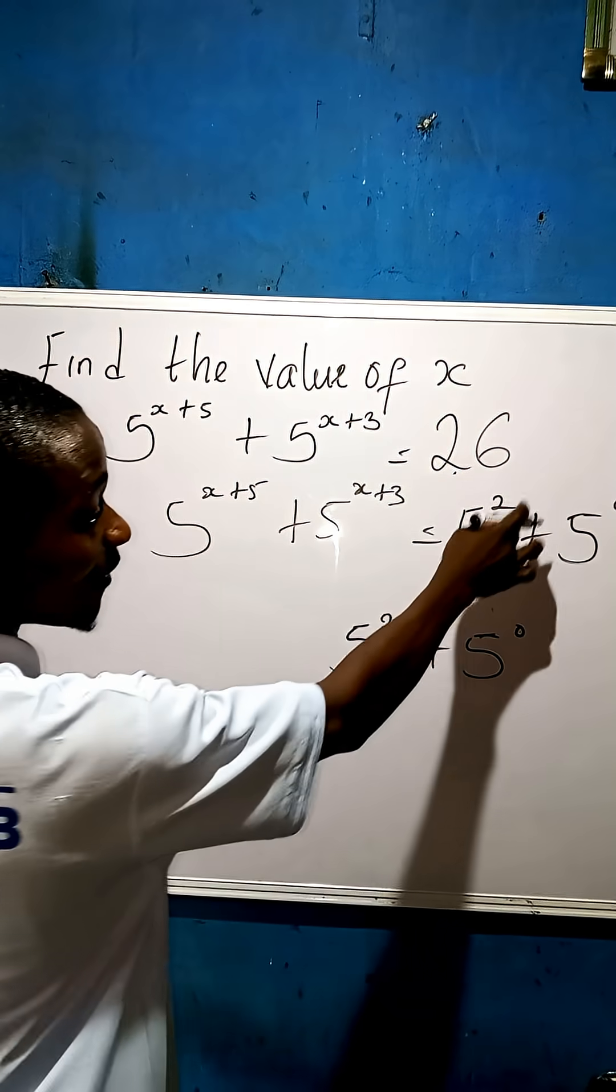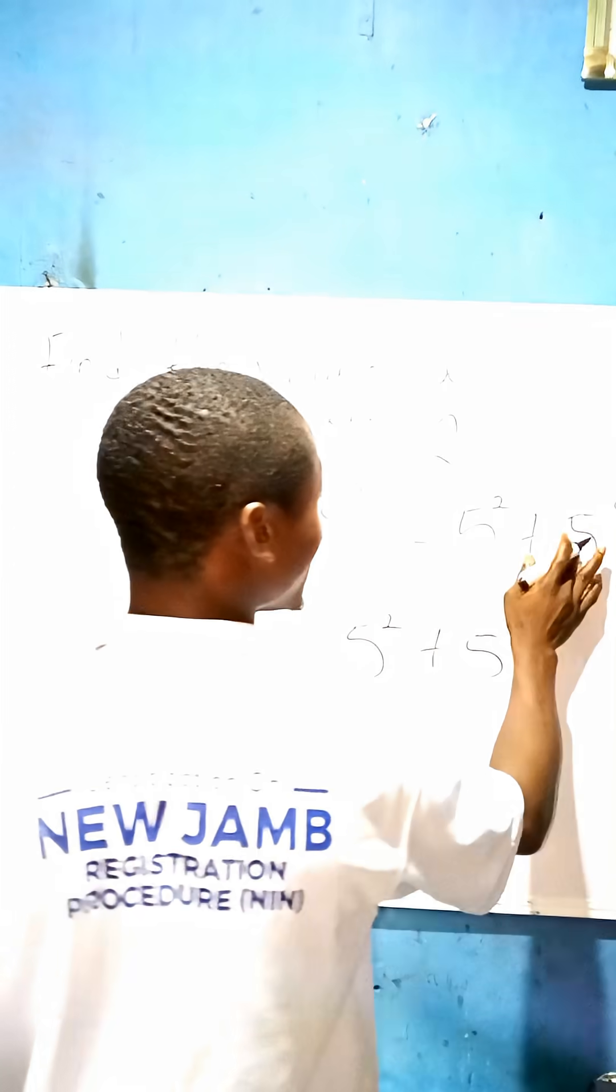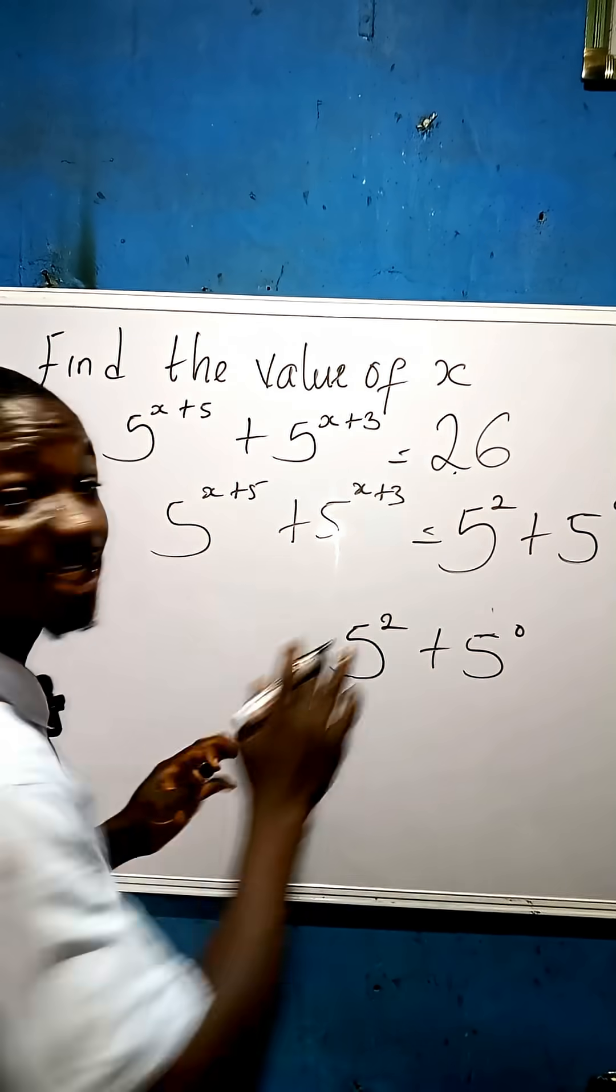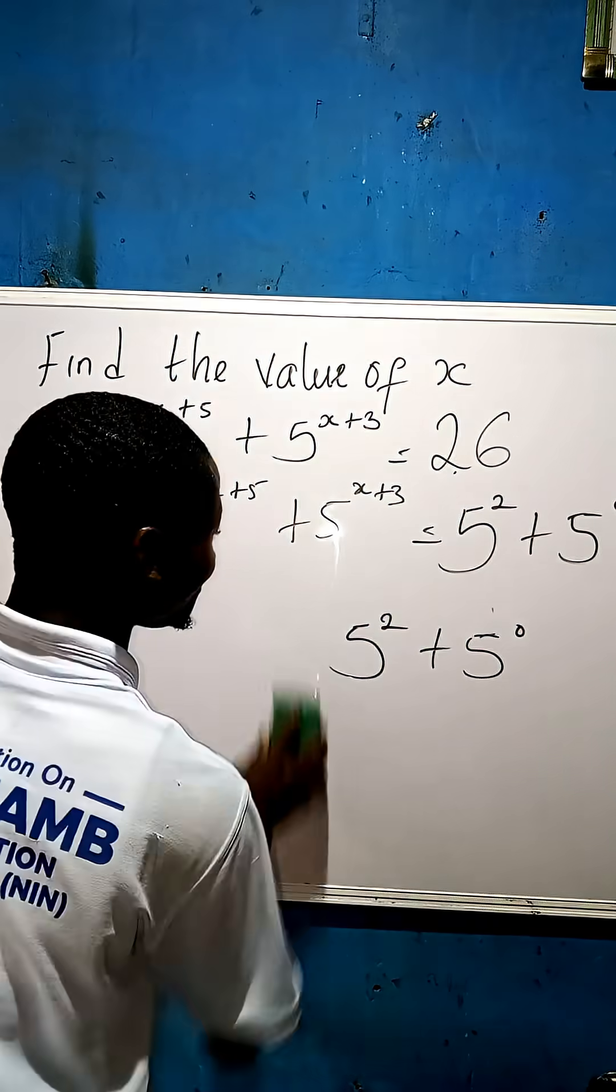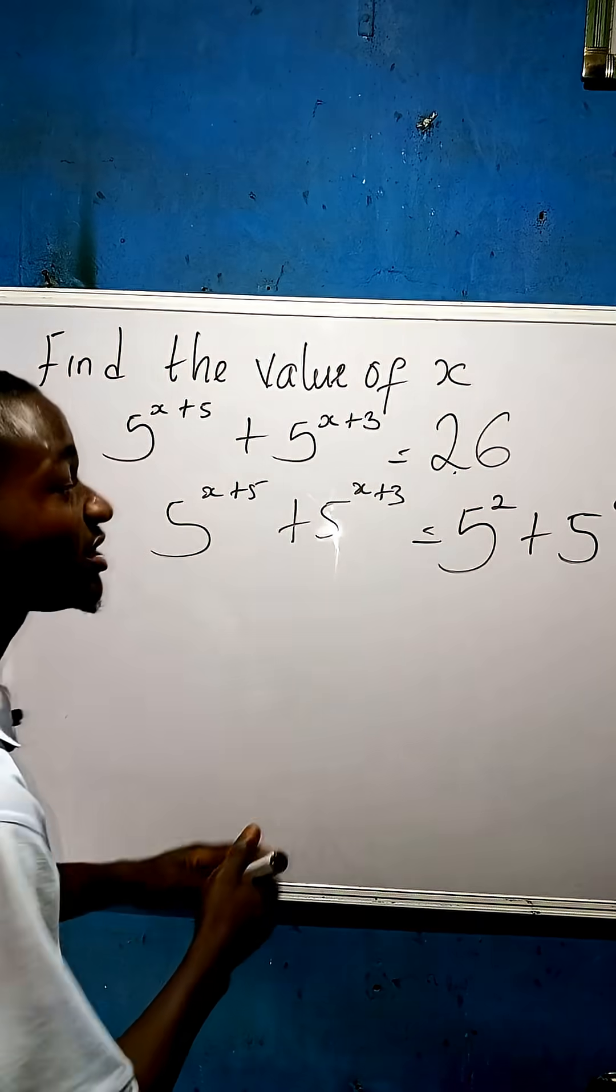Remember, 5 to the power of 2 is 25, and 5 to the power of 0 is 1. We are not moving anything; we are only getting a problem solved gradually. Now having done this, we can see that we have the same base but different powers.